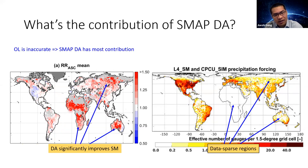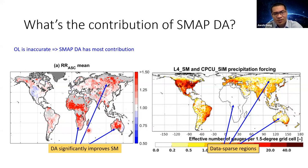In data-sparse regions — for example, Africa, central Asia, and central Australia — data assimilation has a lot of added value for soil moisture estimates. This is because the input meteorological forcing data is not accurate in these regions; as a result, the open-loop run has a lot of error which can be filtered out by SMAP data assimilation.